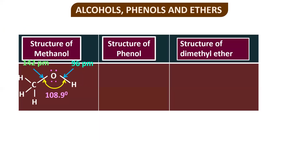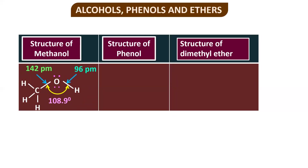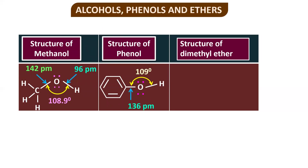If you look at the structure of methanol, notice that the C-O-H bond angle is 108.9 degrees, the bond length between carbon and oxygen is 142 picometers, and the bond length between oxygen and hydrogen is 96 picometers. For phenol, the C-O-H bond angle is 109 degrees, and the carbon-oxygen bond length is 136 picometers.